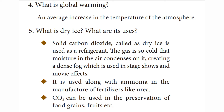What is dry ice and what are its uses? Solid carbon dioxide is called dry ice and is used as a refrigerant. The gas is so cold that moisture in the air condenses on it, creating a dense fog which is used in stage shows and movie effects. It is used along with ammonia in the manufacture of fertilizers like urea. Carbon dioxide can also be used in the preservation of food grains, fruits, etc.